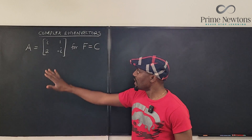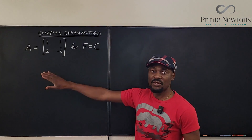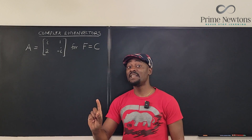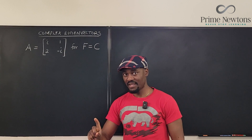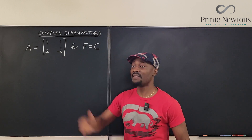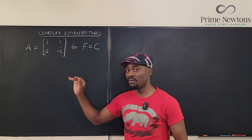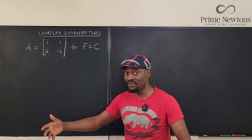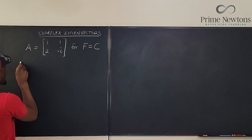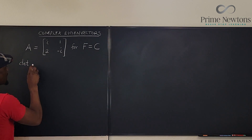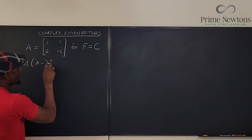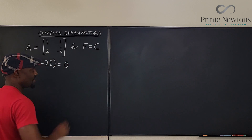How do you find the eigenvectors of any matrix? The first thing to do is to find the eigenvalues first, then you use the eigenvalues to find the eigenvectors from the matrix. To find your eigenvalues, you have to remember that the determinant of A minus lambda I is equal to zero.